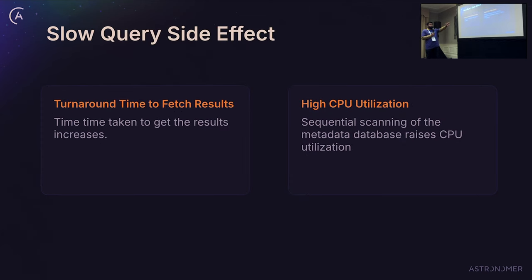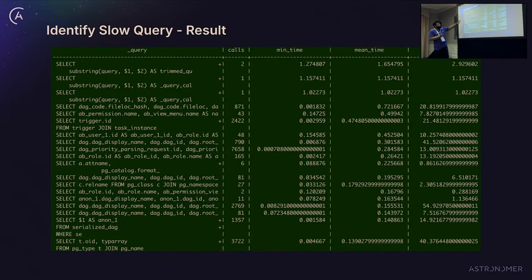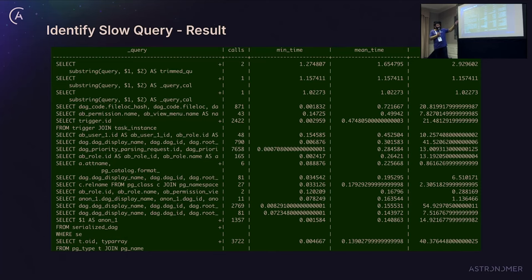Slow queries also have additional side effects: high CPU utilization and slow page loading. To identify slow queries with Postgres — and you'll have similar alternatives for MySQL or MSSQL — there is a built-in pg_stat_statements extension. It's not enabled by default; you'll have to preload the library and then create the extension. With this query, you can find which queries are taking the largest mean time. It gives you the query itself, how many times it was called, minimum time, maximum time, and total time across calls, ordered by mean time. The result shows something like a mean time of 1.65 ms, for example.